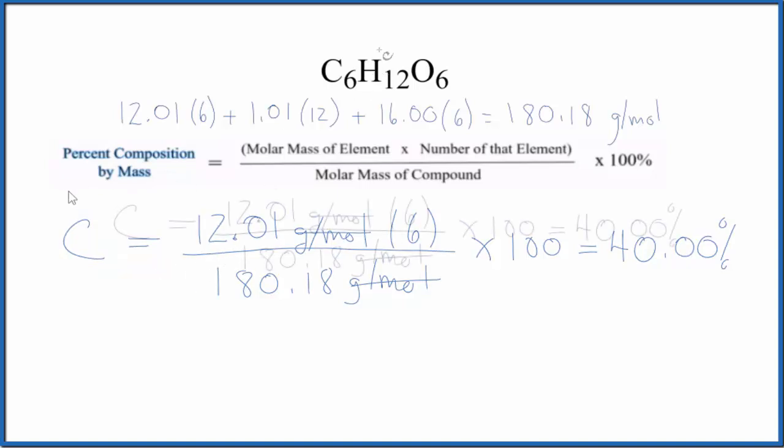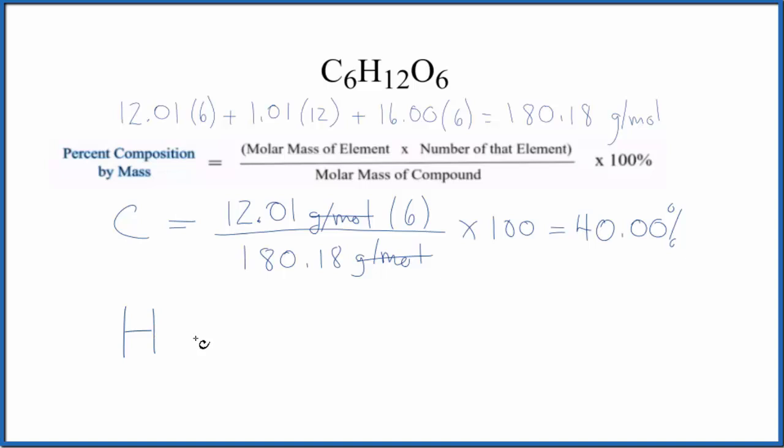Let's do this for the hydrogen. So for hydrogen, on the periodic table, 1.01 grams per mole. Well, I'm not going to write it since it cancels out. We have 12 hydrogen, so we're taking the molar mass, that 1.01 times the number of the element, the 12. Divide that by the molar mass for the compound, 180.18. Multiply it by 100, and we end up with 6.73%.